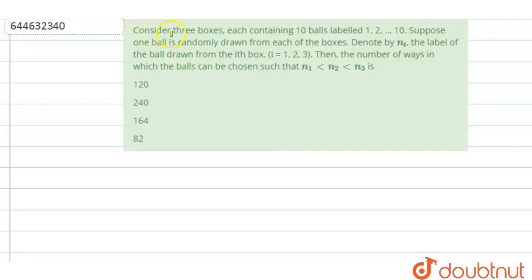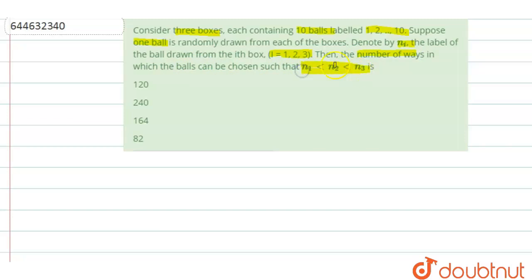Hello everyone. Today we are going to discuss one more question. The question says: consider three boxes, each containing 10 balls labeled 1 to 10. Suppose that one ball is randomly drawn from each of the boxes. Denote by n_i the label of the ball drawn from the i-th box, where i = 1, 2, 3. Find the number of ways in which balls can be drawn such that n1 < n2 < n3.